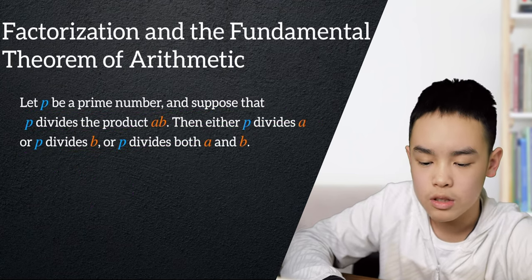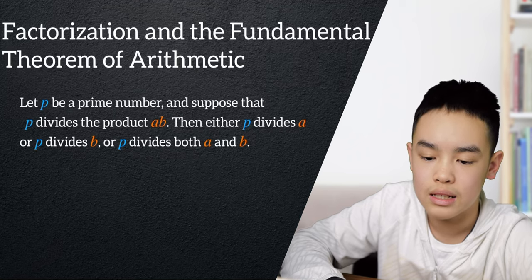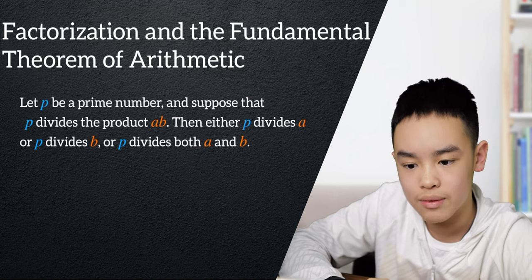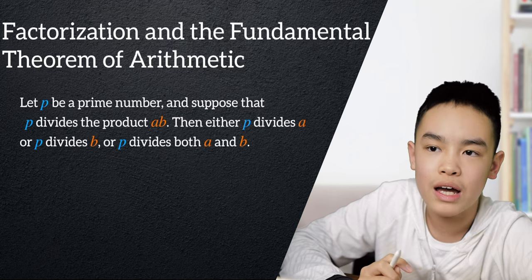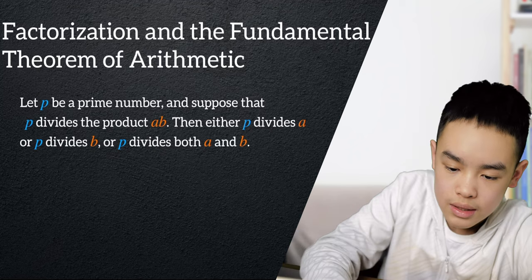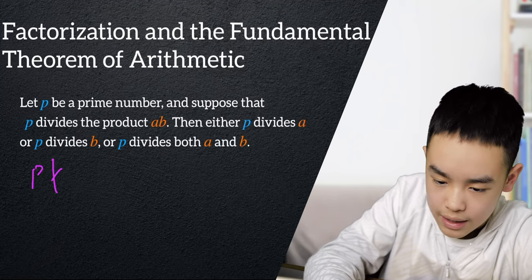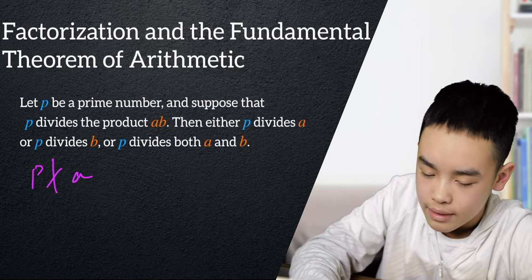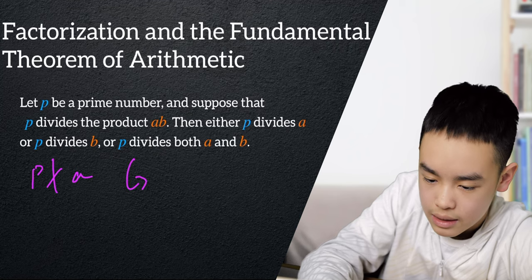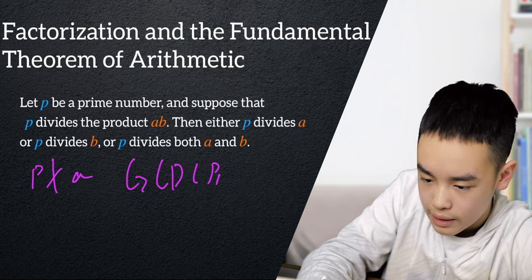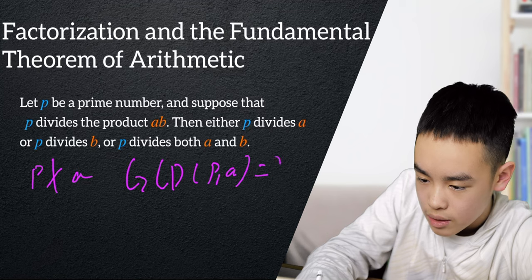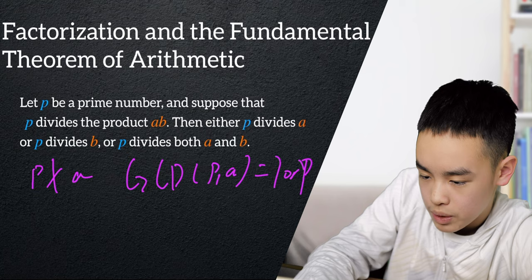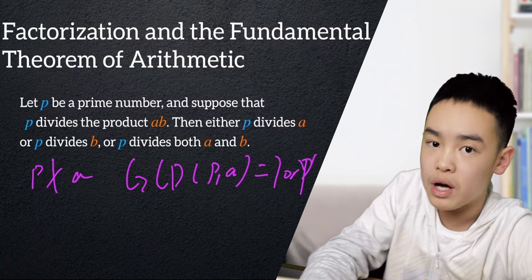So in order to prove this, let's say p can either divide a or cannot divide a. If p can divide a, then we do not need any more proof. So let's say p cannot divide a. And if p cannot divide a, then the gcd of p and a is either 1 or p. But it can't be p, since then p would be able to divide a. So it must be 1.